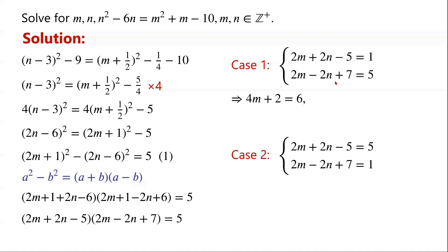Now we subtract the second equation from the first equation. 2m minus 2m is 0. 2n minus negative 2n gives 4n. Minus 5 minus 7 is minus 12. So 4n minus 12 equals minus 4. For m: 4m equals 4, so m equals 1. For n: 4n equals 8, so n equals 2.